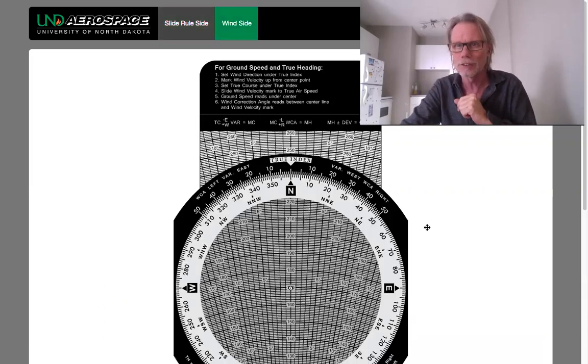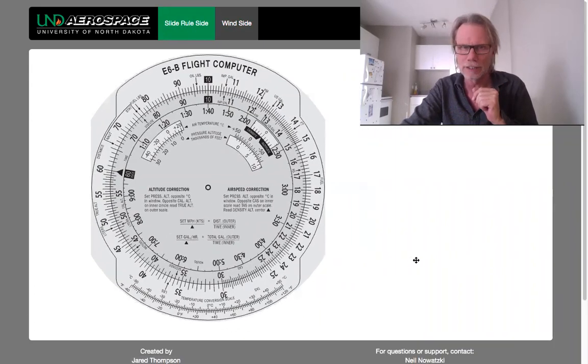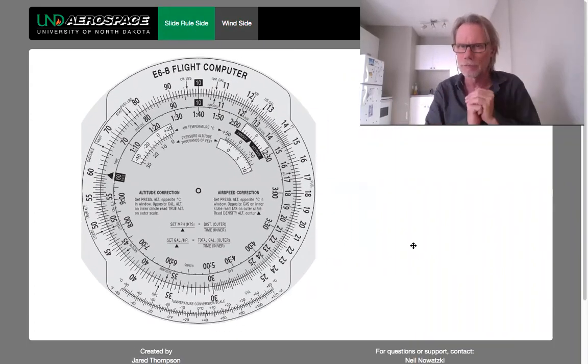Remember there's two sides to the E6B. There's the wind side and there's the slide rule side. We'll get to the wind side in another video. We're still on the slide rule side.